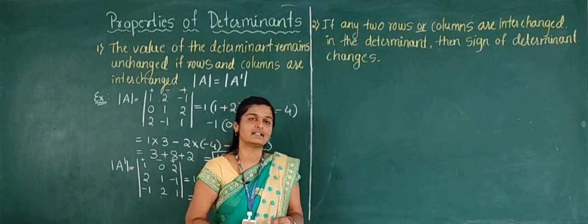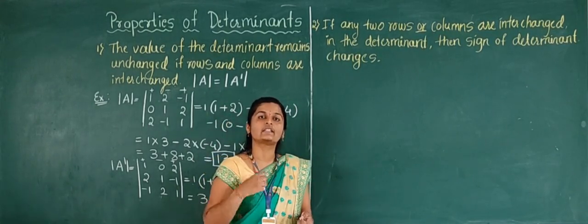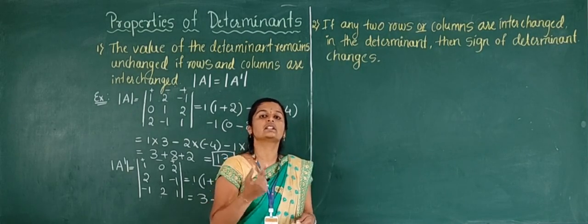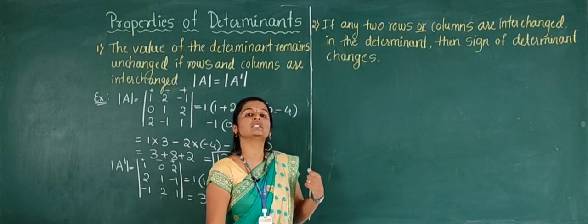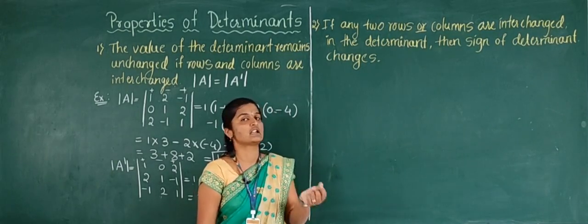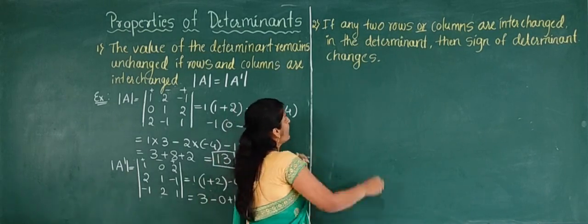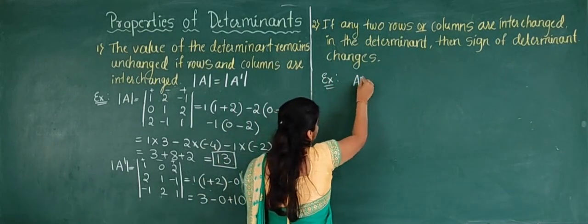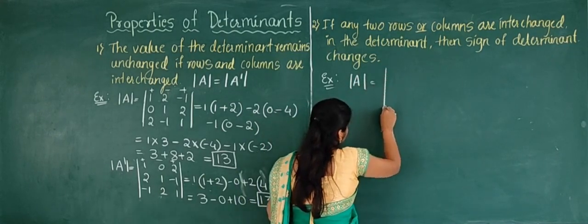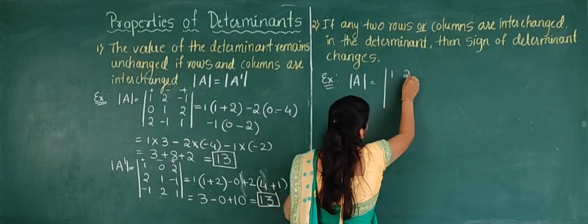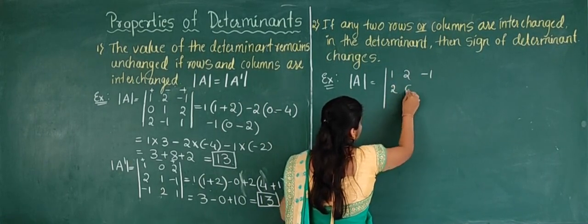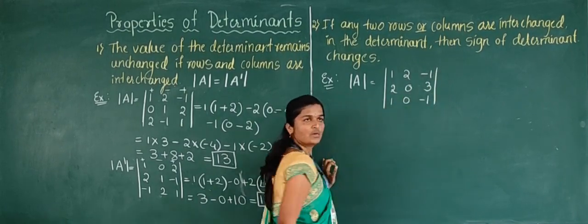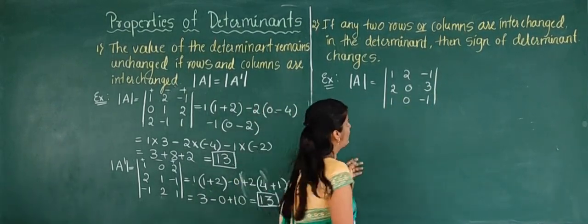The second property states that if any two rows or columns of a determinant are interchanged, only the sign changes but the absolute value remains the same. I will prove this with one example. I take the determinant with first row 1, 2, minus 1; second row 2, 0, 3; and third row 1, 0, minus 1.